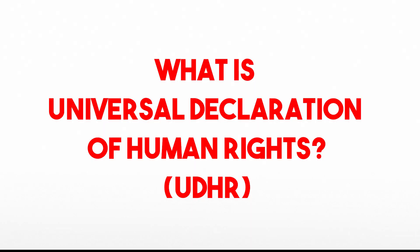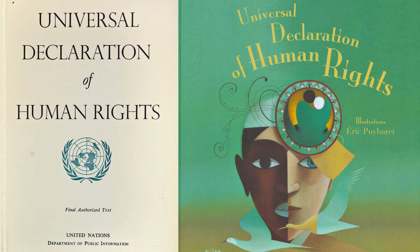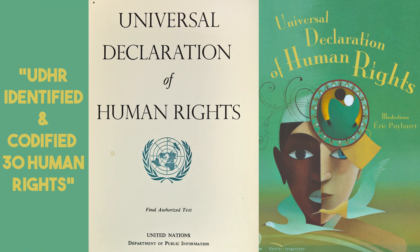What is the Universal Declaration of Human Rights — that is, UDHR? For the first time in history, UDHR identified and codified 30 human rights which are universally applicable to all human beings.